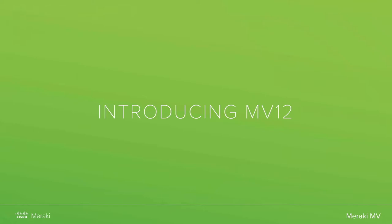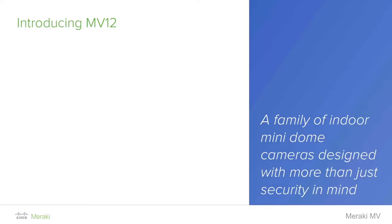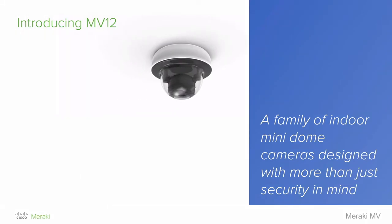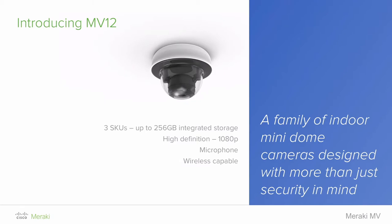I want to highlight some of our newer hardware — this has been a really exciting announcement. We announced the MV12 back in February. The MV12 is the newest addition to our product line; it's a family of indoor mini dome cameras designed for more than just security. It features three SKUs, up to 256 gigs of integrated storage, records in 1080p HD, has a microphone for audio capability, is wireless capable, has a compact form factor, and has a Qualcomm Snapdragon processor on board — the very same processor used in many smartphones around the world today.